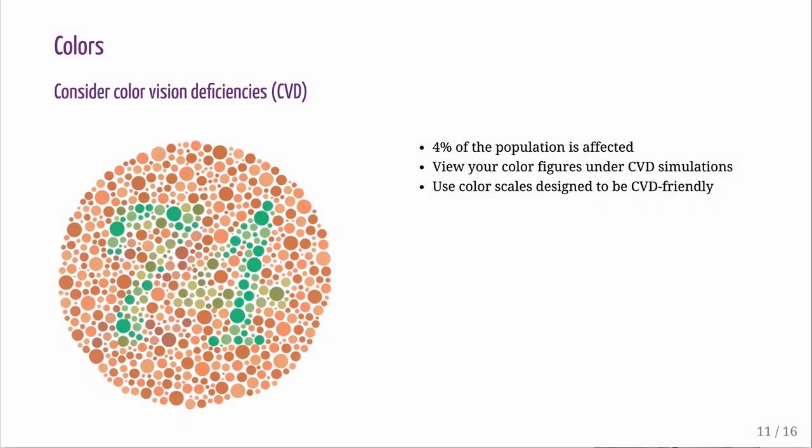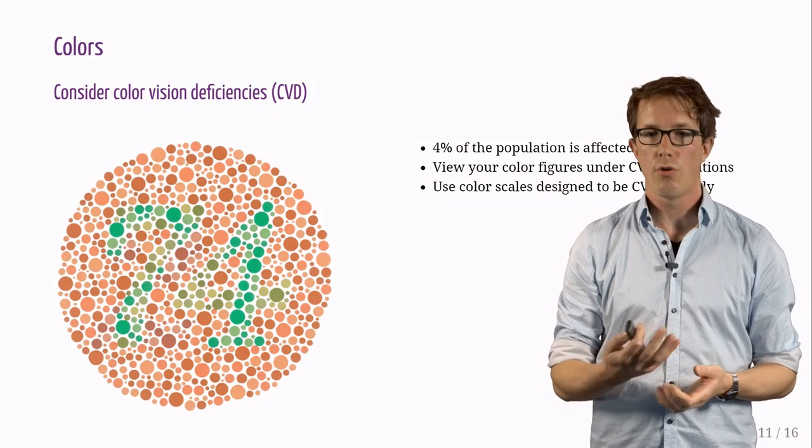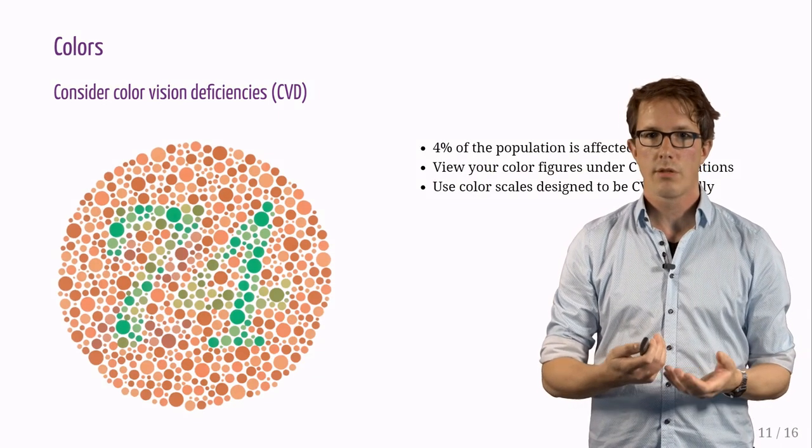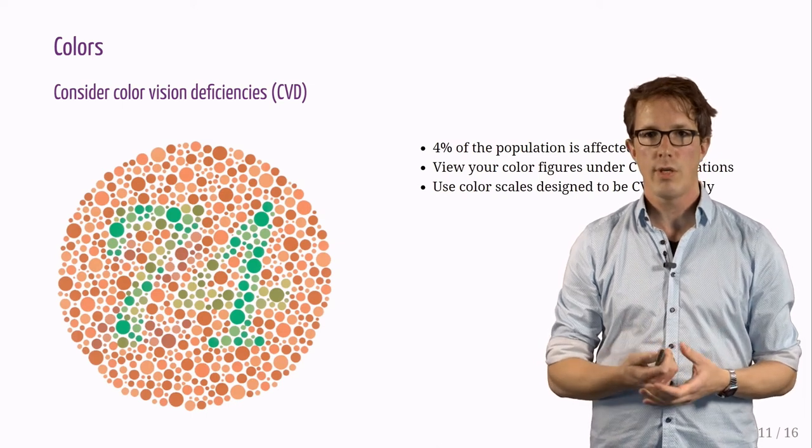One reason for this is color vision deficiencies. 4% of the population is affected and cannot distinguish certain sets of colors. I highly recommend to check your color figures under CVD simulations. Also, you don't need to invent your own color scale, but use color scales that have been designed to be CVD friendly.